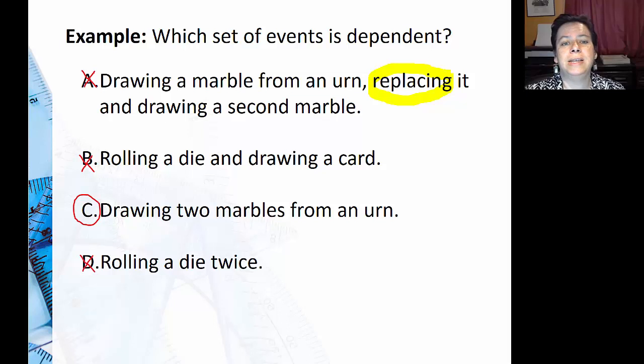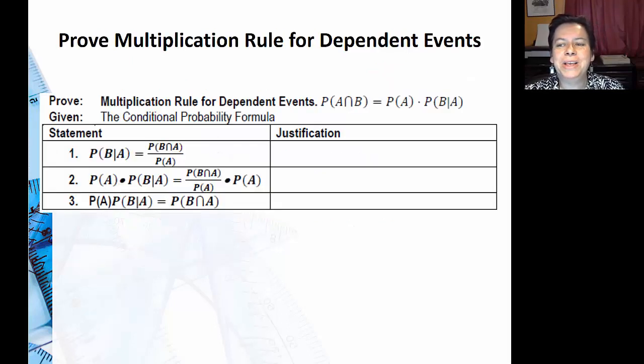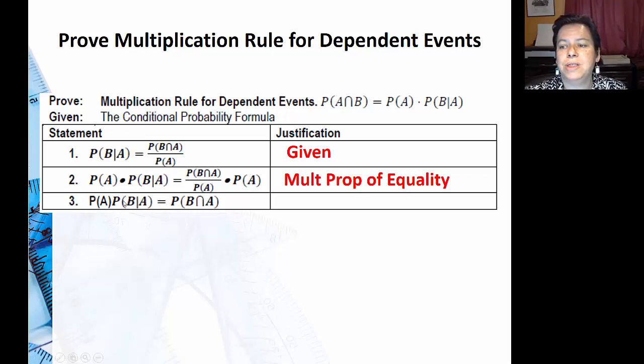I'm going to show you a quick proof of the multiplication rule for dependent events. You won't have to prove it, but let's see what happens here. We have the conditional probability formula from the prior lesson. If I multiply both sides by probability of A, the probability of A on the right side will cancel. By simplifying, this tells me that I can still multiply my probabilities even when events are dependent. It's just that the second probability might be a little different than the first probability.